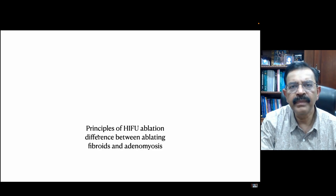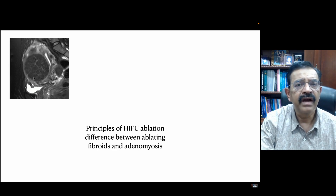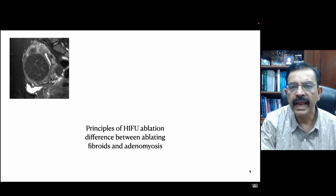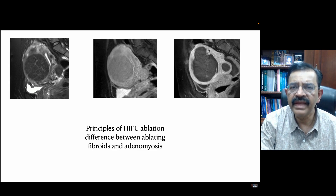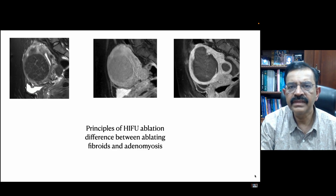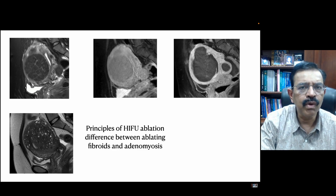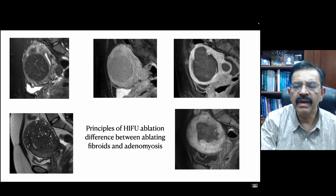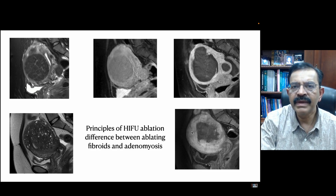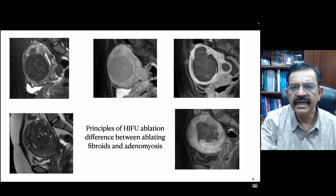What are the principles of HIFU ablation? There is a difference between ablating fibroids and adenomyosis. A fibroid is a well-circumscribed lesion with a capsule, as seen on this contrast MRI. Because they are well circumscribed, it is easy to contain the energy within the capsule and ablate. Adenomyosis, however, is spread all over — usually up to the serosa and can be anterior and posterior. So ablating adenomyosis is far more difficult than ablating a fibroid, as we need a margin of safety at the serosal layer and must avoid the endometrium.